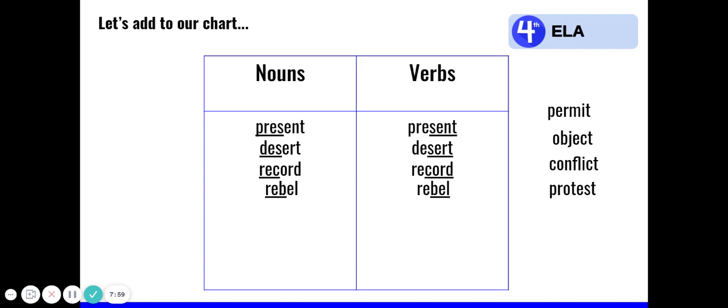Let's look at the next homograph. Permit and permit. When I say the word permit, I accent the first syllable. A permit is a document that allows you to do something. This is a noun. Let's add that noun to our noun column and underline the first syllable. A permit gives authorization or consent to do something. This is an action. So let's add this to our verb column and underline the second syllable. Permit. It's tricky with these homographs. They sound very similar sometimes.